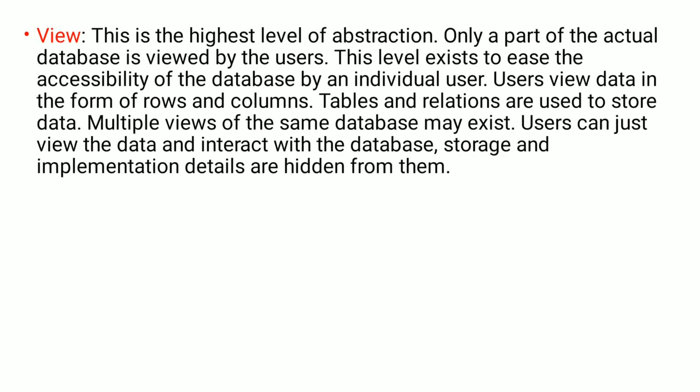In simple words, the view level is the highest level of abstraction that describes only a part of the entire database. The view level can provide access to only part of the database, not the whole database. This level helps in simplifying the interaction with the system. For example, if you want to access the contact number or PRN number of a student, the view level can provide access to only that particular column — that is, the PRN number of the student.